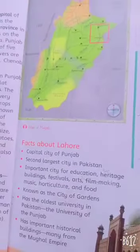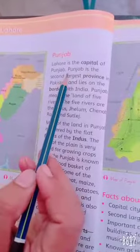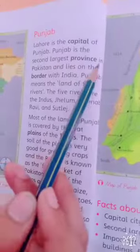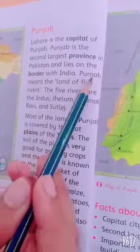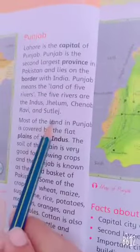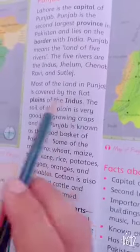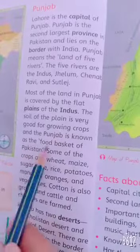Now let's repeat the topic with reading. Punjab — Lahore is the capital of Punjab. Punjab is the second largest province in Pakistan and lies on the border with India. Punjab means the land of five rivers. The five rivers are the Indus, Jehlam, Chenab, Ravi and Satluj. Most of the land in Punjab is covered by the flat plains of the Indus. The soil of the plain is very good for growing crops, and Punjab is known as the food basket of Pakistan.